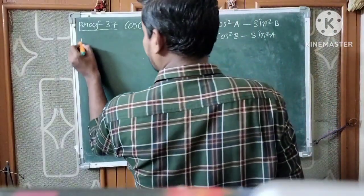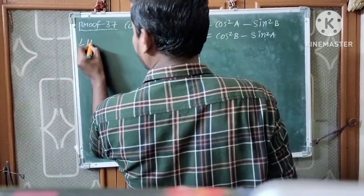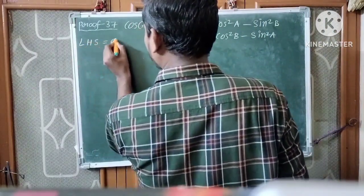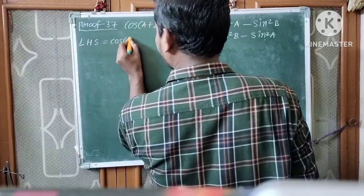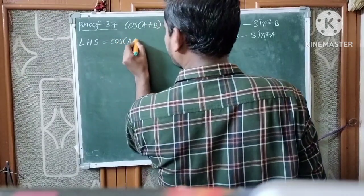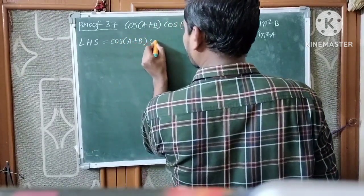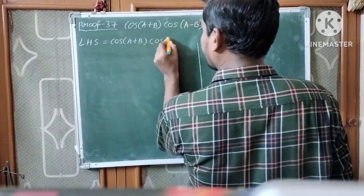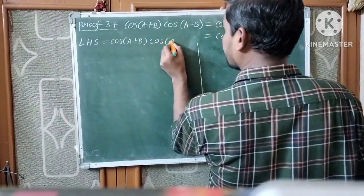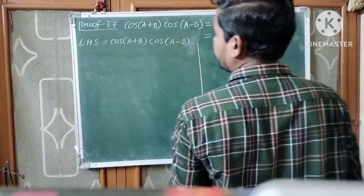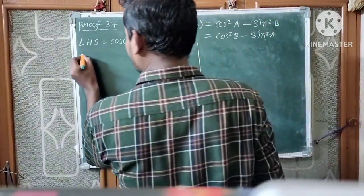So, here the left-hand side expression is cos(A+B) · cos(A-B).